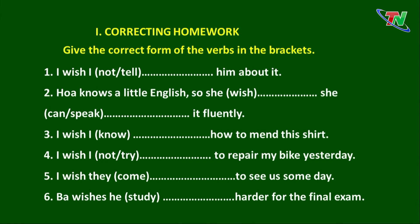The first: I wish I not tell him about it. Ở câu số 1, chúng ta nhận ra khi muốn mong ước một điều gì đó đã xảy ra trong quá khứ, chúng ta có thể sử dụng câu mong ước ở thì quá khứ với 'not tell' là dạng phủ định. Chúng ta sẽ sử dụng 'had not told'. Đáp án: I wish I had not told him about it.